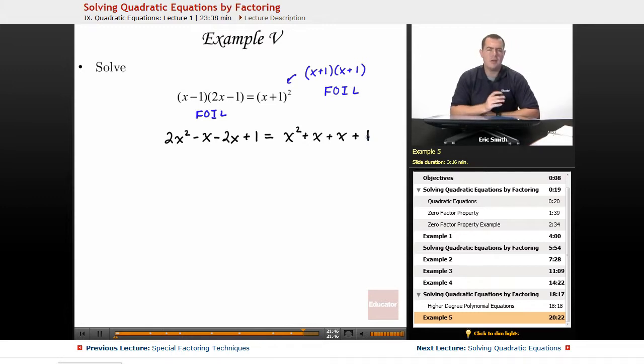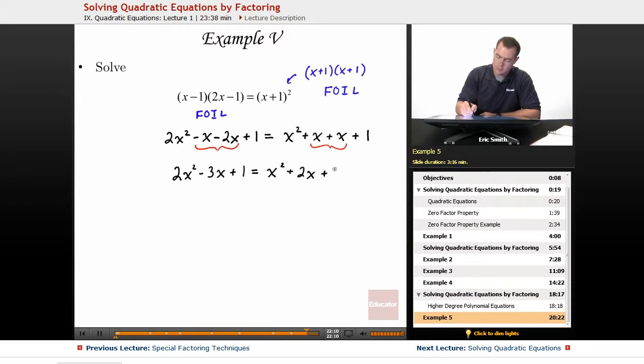And now I have better freedom on really combining things together. Let's combine together these x's and these x's. So, 2x² - 3x + 1, all equal to x² + 2x + 1. All right. Now I can see that this is definitely quadratic. I've got lots of x squareds, and I have a much better task of getting it all to one side and getting it equal to 0.